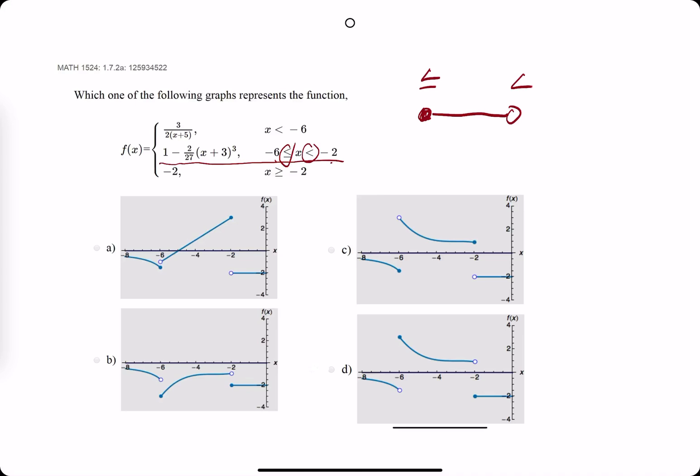So, the only functions that have this as the middle piece, we can eliminate option A, eliminate option C, so the only options are B and D.